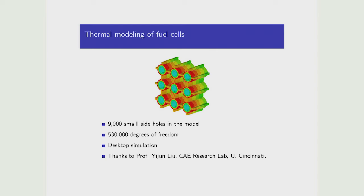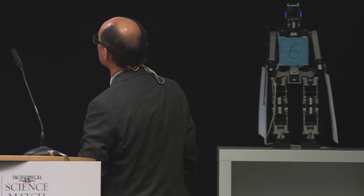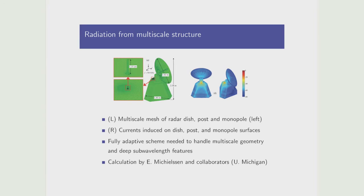The fuel cell example involves a structure with 9,000 small holes drilled in the side. Just describing the geometry requires about half a million degrees of freedom — and you haven't discretized space at all, just the geometry itself is that complicated. You can do these simulations on a desktop. The radar dish picture shows a very small antenna and blow-ups of its structures, with an enormous number of degrees of freedom at many spatial length scales required to do these simulations not just correctly, but automatically.